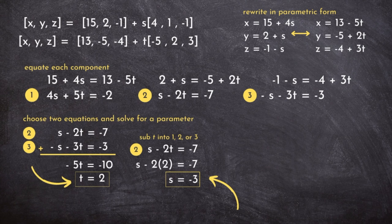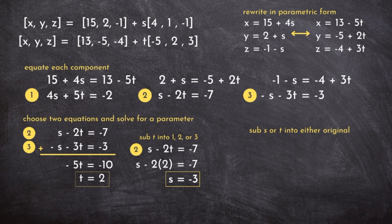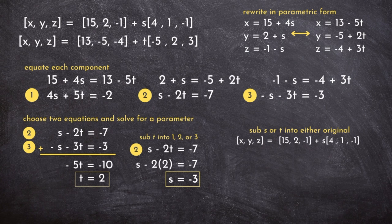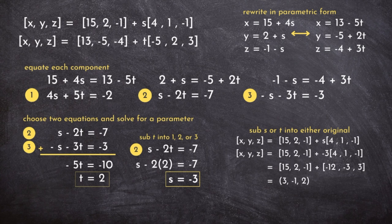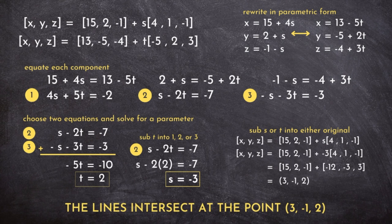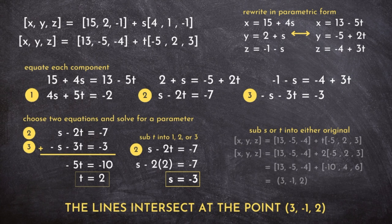We have s and t, but how do we get the point of intersection? Let's pick s or t and substitute it into either of our original lines. For example, the top line has s, so I'll substitute s in there. When I distribute and simplify, I end up with the point (3, -1, 2) as our point of intersection.